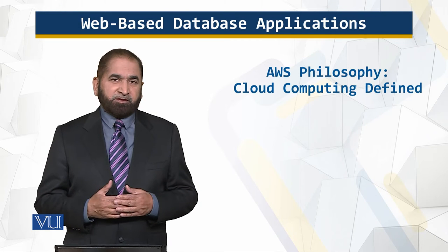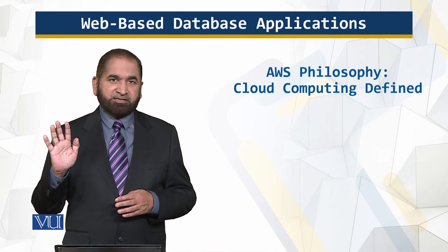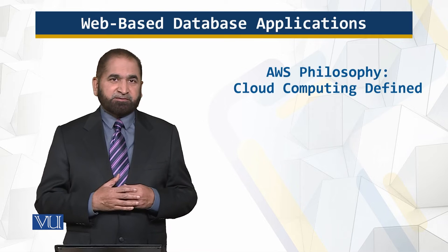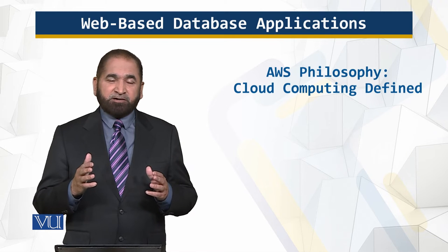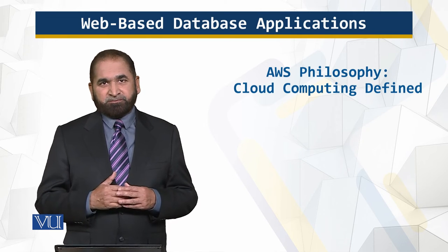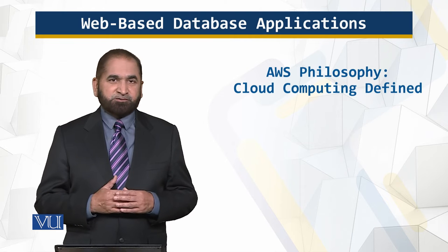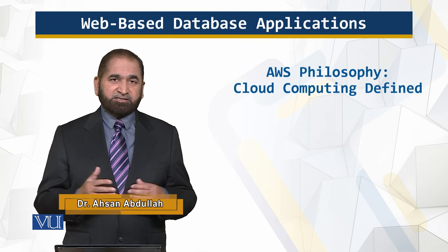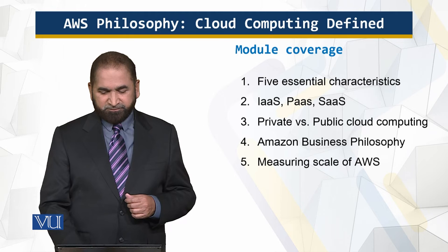In this module I will define what is cloud computing, and I will talk about the five essential characteristics of cloud computing. I will also talk about the three types of main services: infrastructure as a service, platform as a service, and software as a service. I will also talk about the public and private cloud, the Amazon business philosophy, and the size of the Amazon cloud infrastructure.